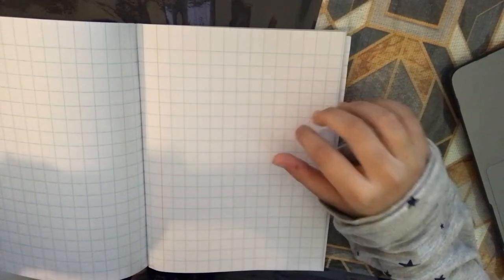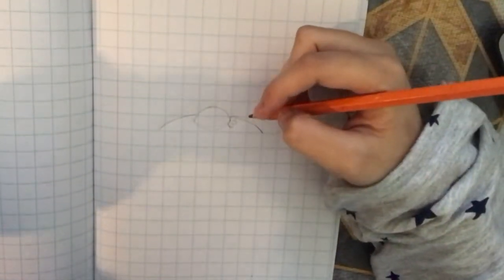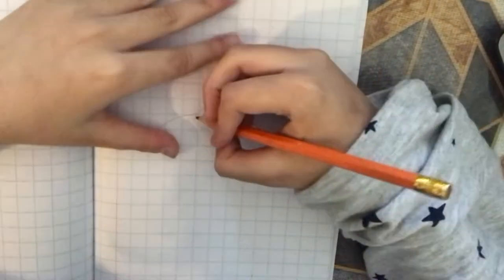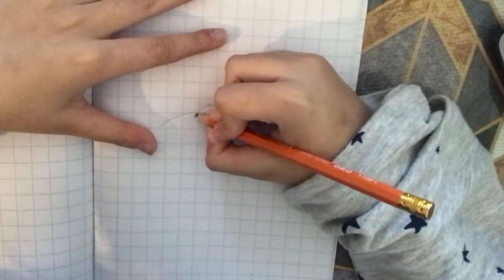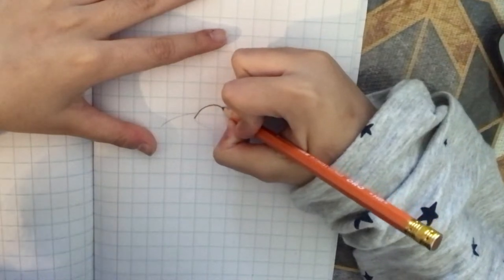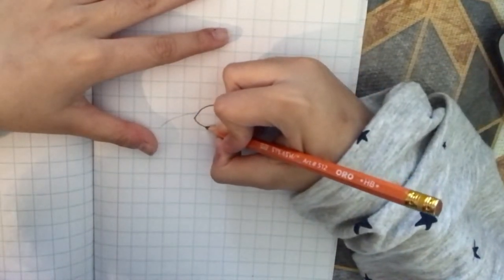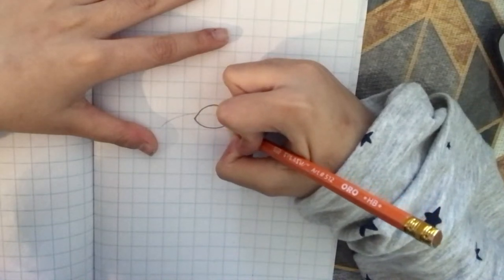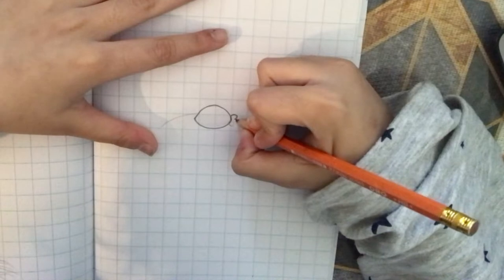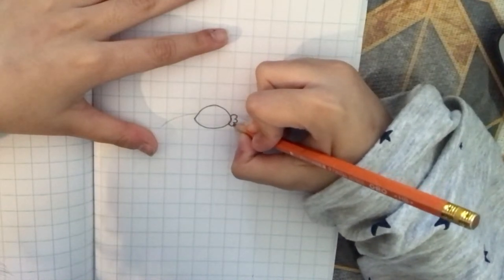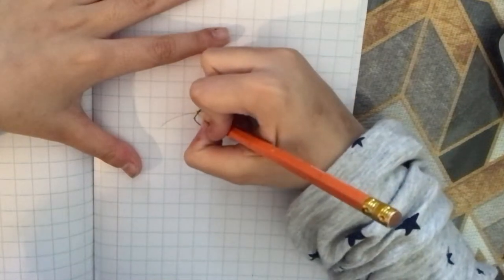So without further ado, let's get started. Now to start off with our angel food cake, I'm going to start over here. We're going to be drawing a strawberry on top of it. I'm going to draw a curve on the right side on top of that, and I'm going to start right here.